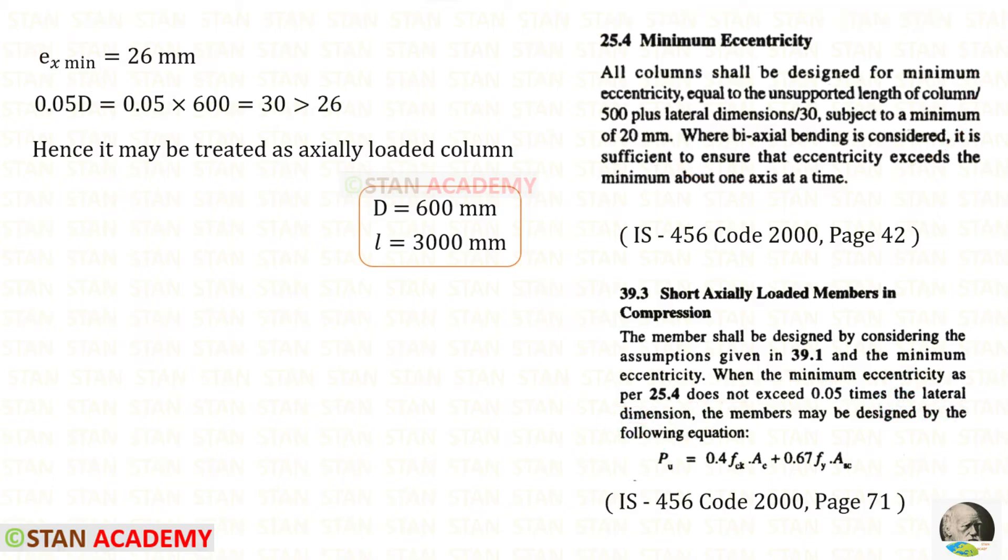0.05 into D we will get 30, which is more than 26. So the minimum eccentricity does not exceed 0.05 times the lateral dimension. So the column is axially loaded and we can use this equation to find the area.